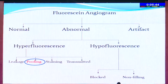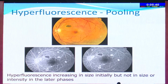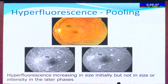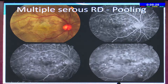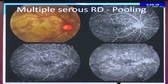Pooling hyperfluorescence is characterized by an increase in intensity initially but not in size in the later phases of the angiogram. This is a classical example of multiple serous retinal detachments, where in the late phases the pooling is better delineated. You can see these pockets of hyperfluorescence — this is a classical description of pooling hyperfluorescence.